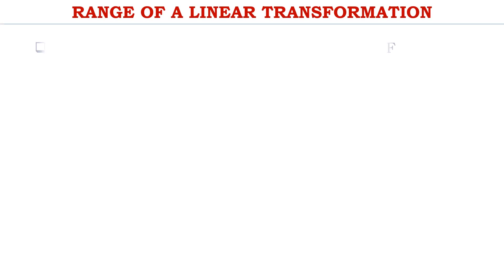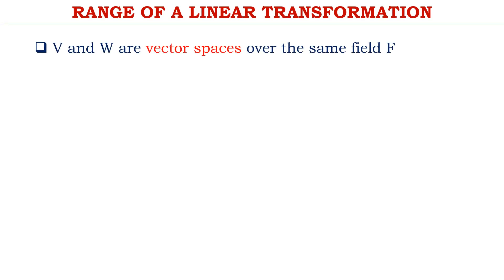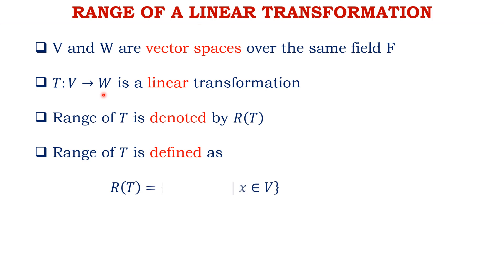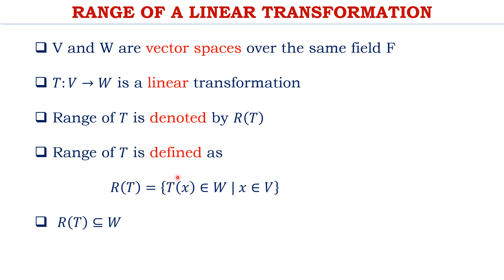Let me first define the range of a linear transformation. Consider two vector spaces V and W defined over the same field F, and define a linear transformation T from V to W. Then the range of T, denoted R(T), is defined as the set of all images defined in W for every element X belonging to V. Every element of R(T) is of the form T of X, and T of X belongs to W.